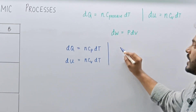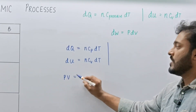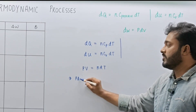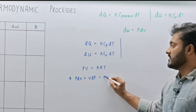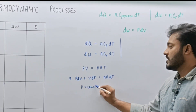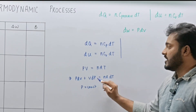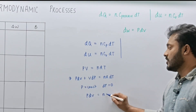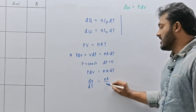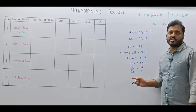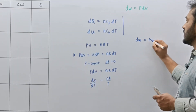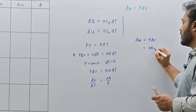Next, we deal with work done. Since we are dealing with an isobaric process, we write PV equals NRT. Writing this in differential form gives PDV plus VDP equals NR DT. Since pressure is constant, DP equals 0, so PDV equals NR DT. This expression is the differential equation for the isobaric process, and PDV equals NR DT shows that work done PDV can also be written as NR DT.